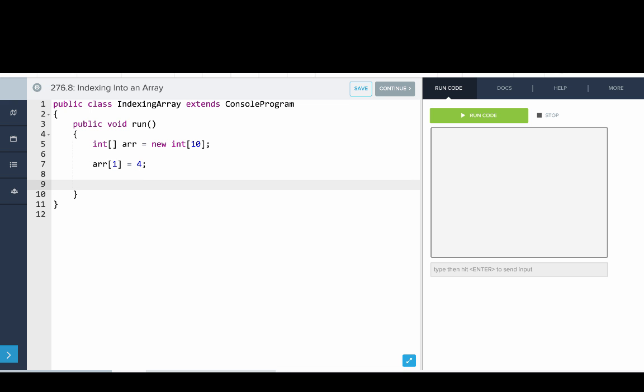Okay, so now index one gets the value four. Now let's print out that value. So we'll print out ar of one. Let's try that. Great. So it does what we think.